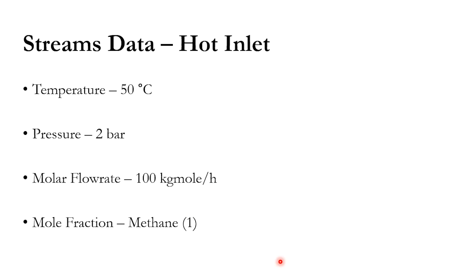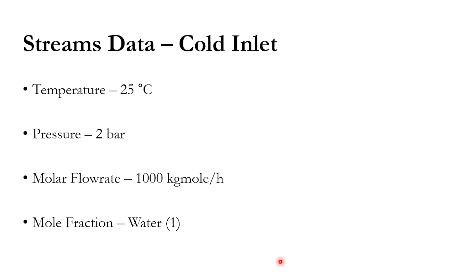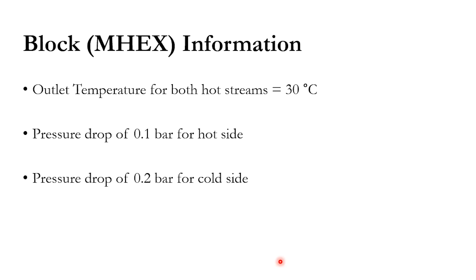For the stream data: the two hot streams are both methane at 50°C, 2 bar, and 100 kmol/hr. The cold inlet stream is water at 1000 kmol/hr, 2 bar, and 25°C. The block information specifies a pressure drop of 0.1 bar on the hot side for both hot streams, and 0.2 bar on the cold side. The outlet temperature for both hot streams is 30°C, so the outlet temperature of the cold stream will be computed.